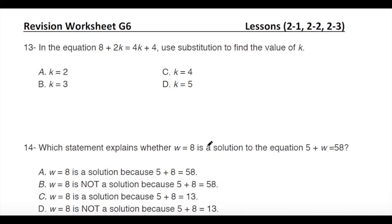Next: in the equation 8 plus 2k equals 4k plus 4, use substitution to find the value of k. If k equals 2: left side is 8 plus 4 equals 12, right side is 8 plus 4 equals 12 — this works. If k equals 3: left side is 8 plus 6 equals 14, right side is 12 plus 4 equals 16 — does not work.